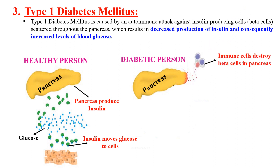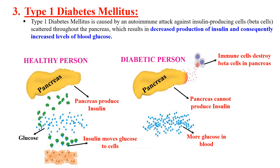But in the diabetic person, the self-reactive immune cells destroy the beta cells in the pancreas. As a result, there is decreased or absent insulin production. Without insulin, glucose cannot move inside the cells and remains in the blood, ultimately increasing blood glucose levels. Type 1 diabetes mellitus is an autoimmune disease because it is caused by self-reactive immune cells.